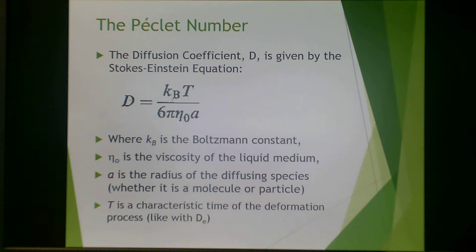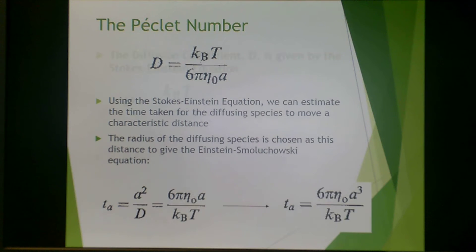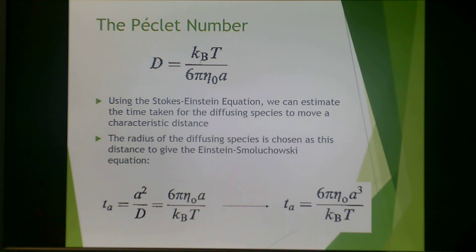The diffusion coefficient is given by the Stokes-Einstein equation, where k sub b is the Boltzmann constant, eta sub zero is the viscosity of the liquid medium, and a is the radius of the diffusing species — whether it's a molecule or a particle. t is the characteristic time for deformation, much like the Deborah number. Using Stokes-Einstein, we can estimate the time taken for the diffusing species to move a characteristic distance, with the radius chosen as that distance.